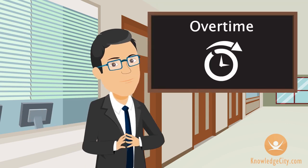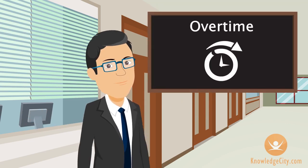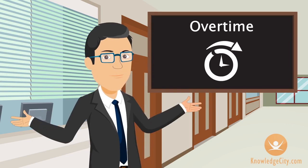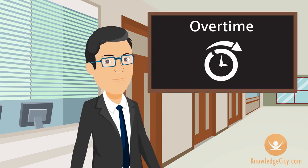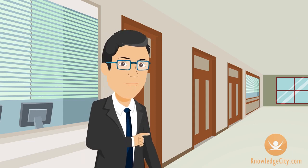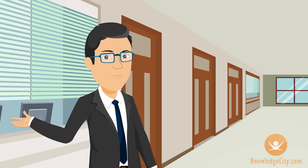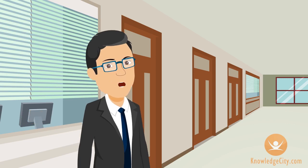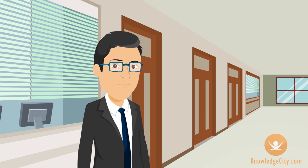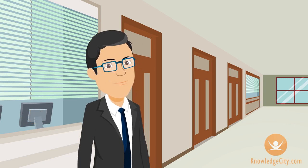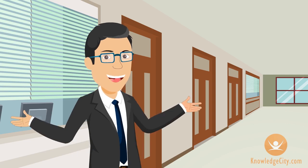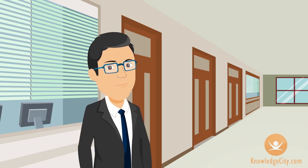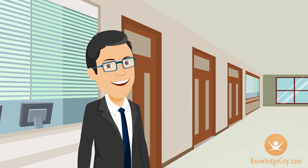Overtime. Another way that people can commit embezzlement is through the falsification of overtime records. An hourly paid manager from the local branch office of a bank could do this. If they punched in their card at the beginning of their shift and then left at the end of their regular shift, say eight hours later,